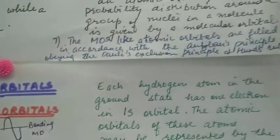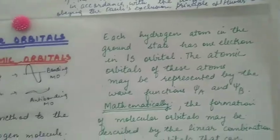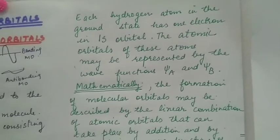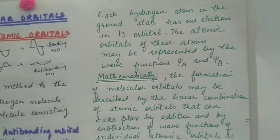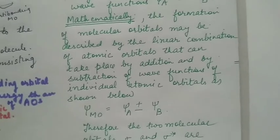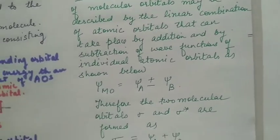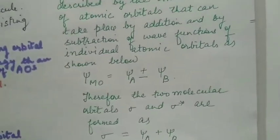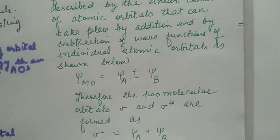Each hydrogen atom in the ground state has one electron in the 1s orbital. The atomic orbitals of these atoms may be represented by the wave functions ψA and ψB. Mathematically, the formation of molecular orbitals may be described by the linear combination of atomic orbitals, which can take place by addition and by subtraction of wave functions of individual atomic orbitals.